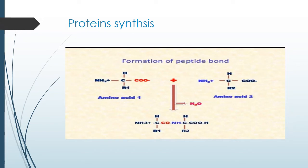One peptide bond forms, then another amino acid comes and links with it. So many amino acids are linked together, and this chain is called the polypeptide chain. The bond which links amino acids is called the peptide bond. When more than 100 amino acids are linked with peptide bonds, this chain becomes a polypeptide chain. When the polypeptide chain forms with more than 100 amino acids linked, the structure formed is called the protein structure. This is called protein synthesis.